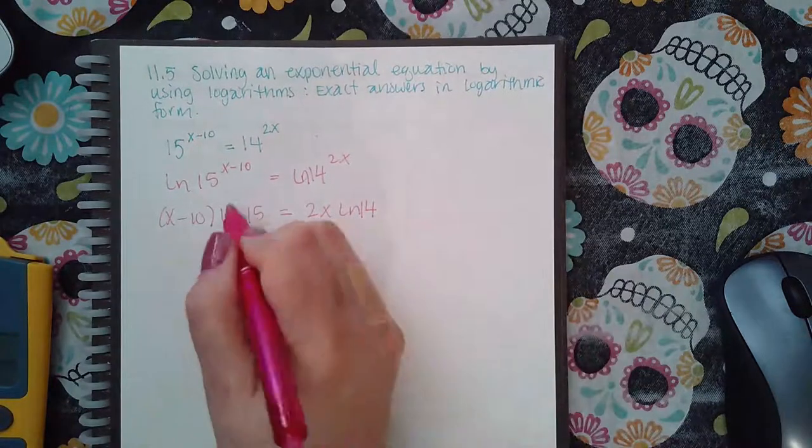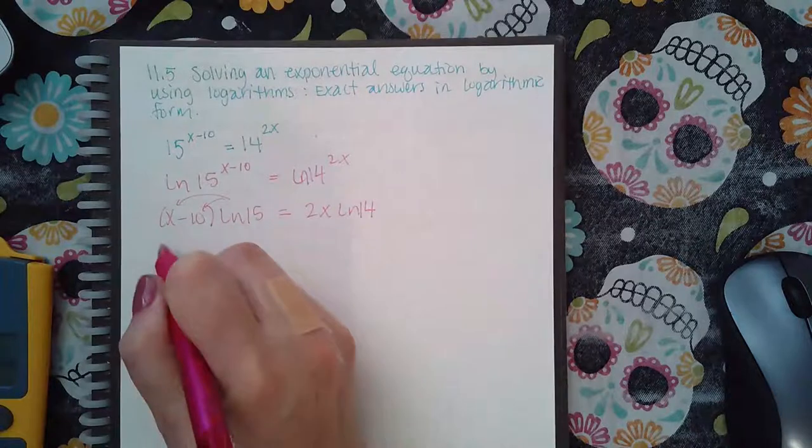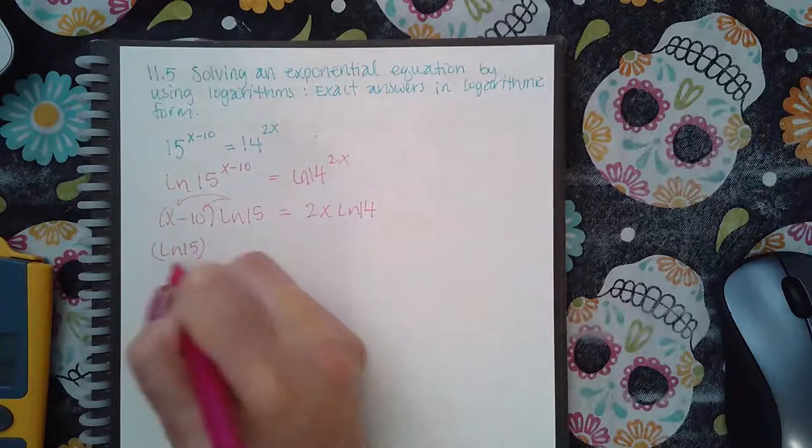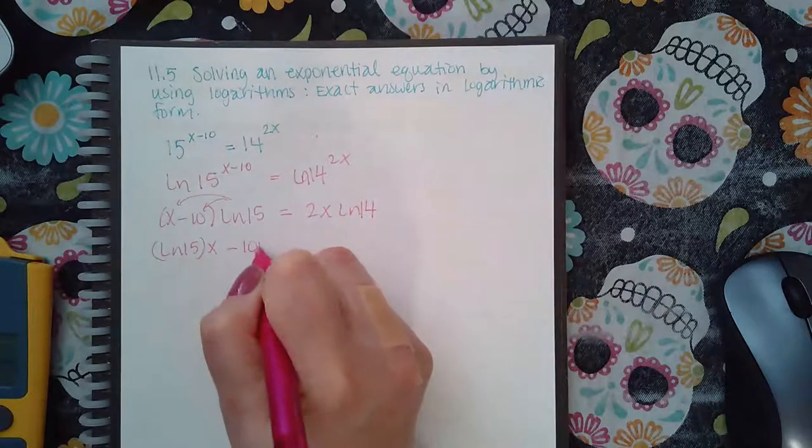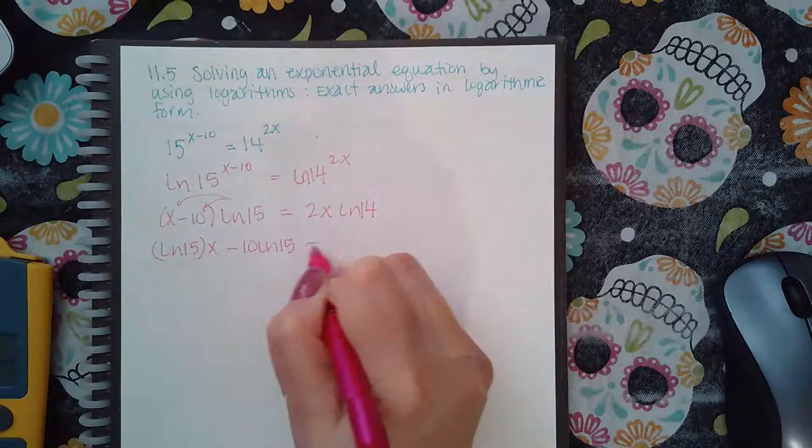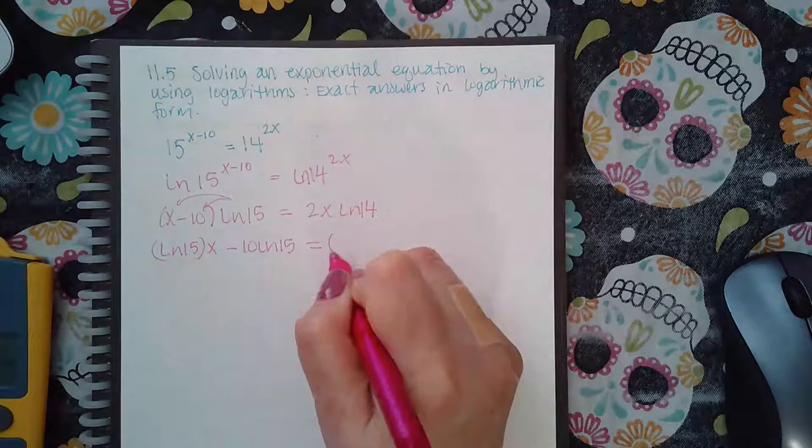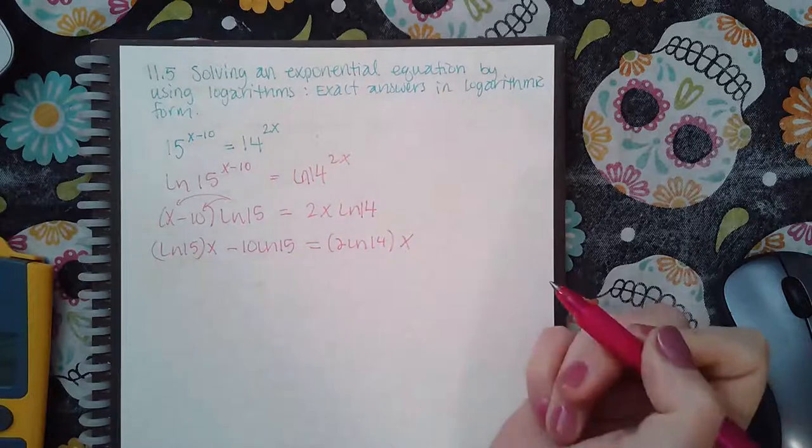If I distribute this, I have ln of 15 as a coefficient of x, minus 10 ln of 15 as a constant. Here I have 2 ln of 14 as a coefficient of x.